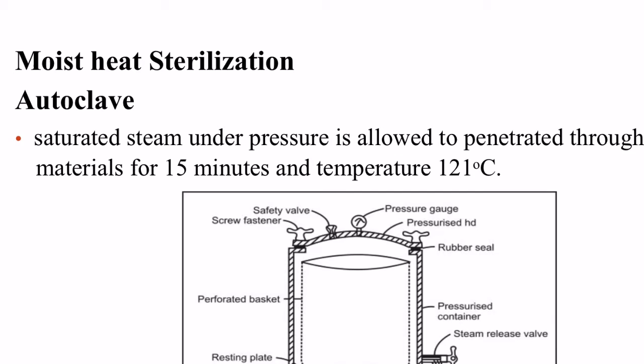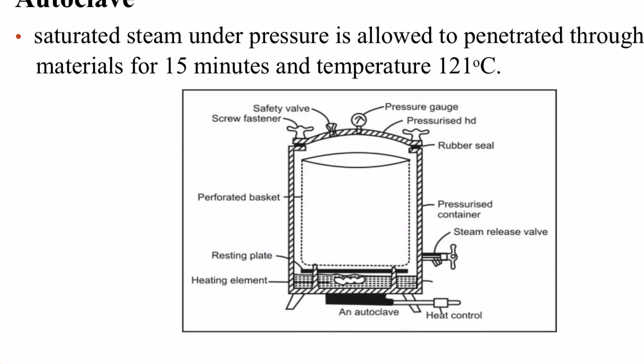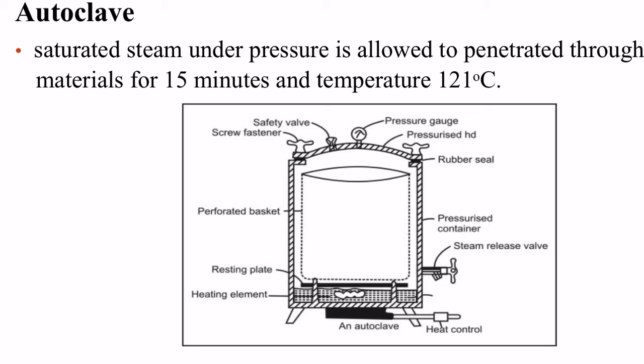Next is moist heat sterilization. In moist heat sterilization, we use water. In dry heat you use simple heat with no moisture or water involved, but here water is involved — vapors and steam are used. We know that the instrument is an autoclave, and in an autoclave we generate steam under pressure. The temperature is 121 degrees Celsius for 15 minutes at 15 lb pressure.